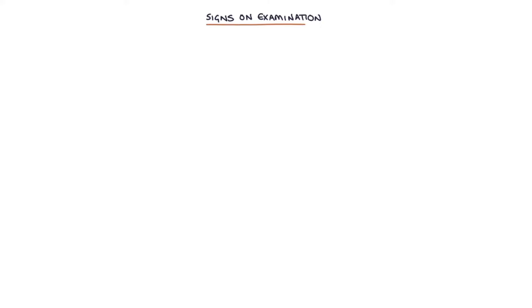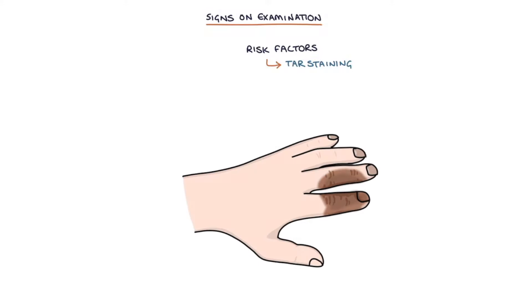Next let's talk about the signs of peripheral arterial disease on examination. You can look for risk factors such as tar staining on the fingers, which can indicate smoking, and xanthamata, which are yellow cholesterol deposits on the skin, indicating hyperlipidemia.